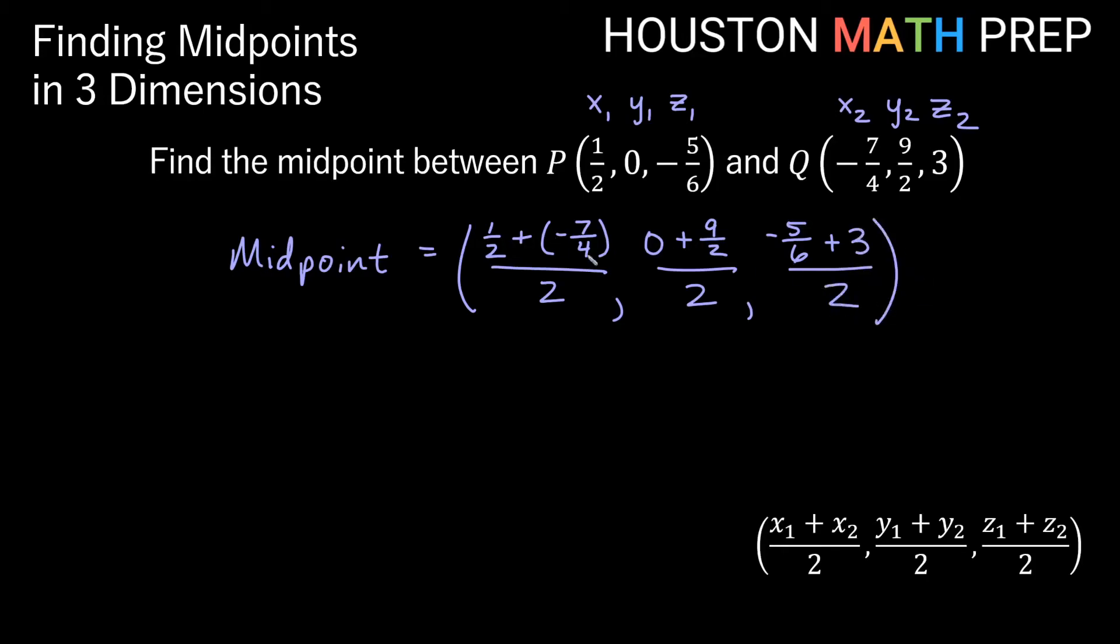And the z will be negative 5 sixths plus 3 over 2. So we'll need to do some common denominator stuff to add these together. So if I think of this, a common denominator would make this 1 half into 2 fourths. So we'll have 2 fourths minus 7 over 4, and that'll be over 2.